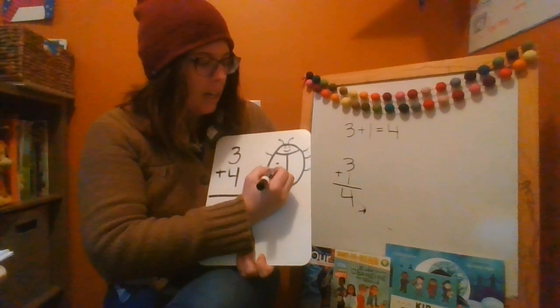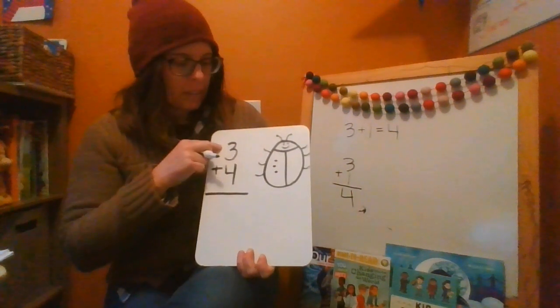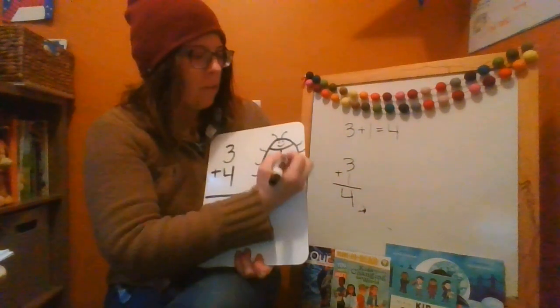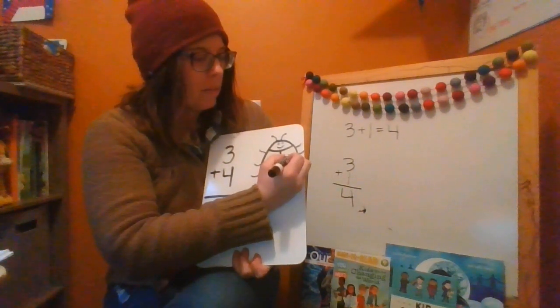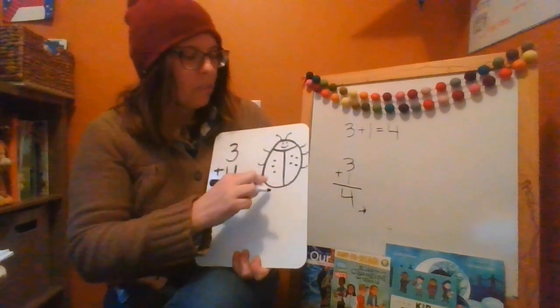So I'm going to do 3, because that's 3 on this side. 3 plus 4. So then over on this side I'll add my 4. 3 plus 4.